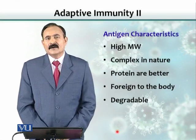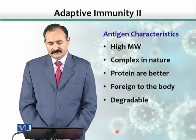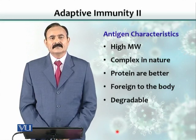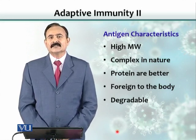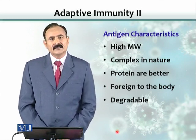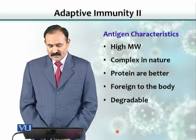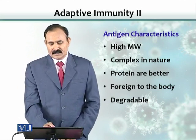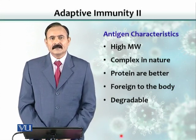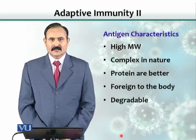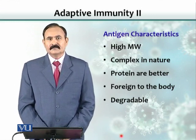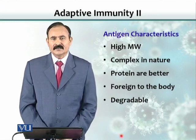There are certain properties that antigens should have. First, a high molecular weight — as mentioned, anything close to 10,000 Daltons is a good antigen, and the larger the molecule, the better antigen it is. Second, the complexity of the molecule — if a protein molecule is complex, it will be a good antigen. Generally speaking, proteins are better antigens because of their complexity.